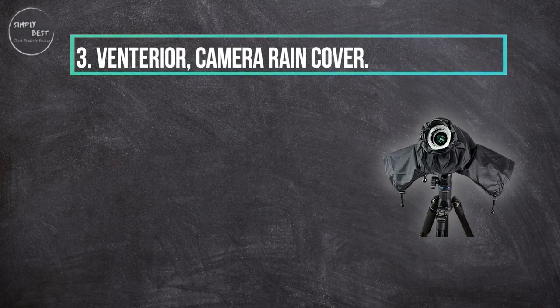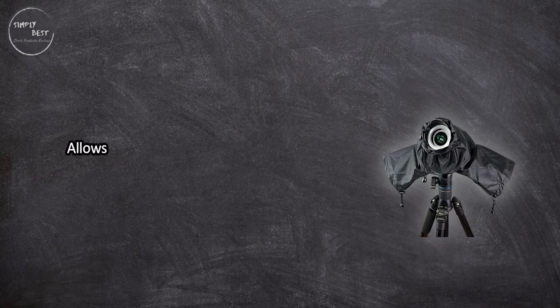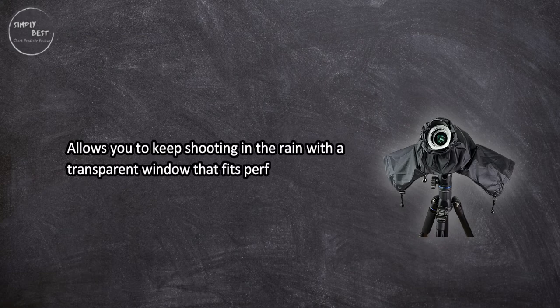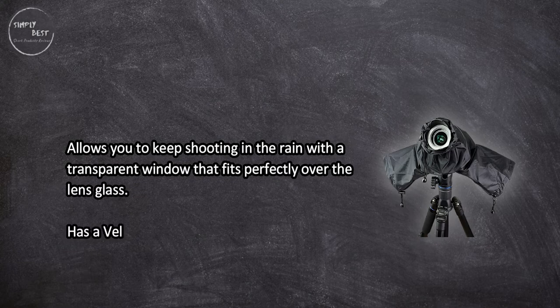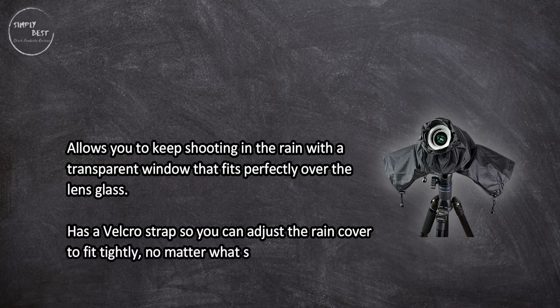At number three, the Interior camera rain cover allows you to keep shooting in the rain with a transparent window that fits perfectly over the lens. It has a velcro strap so you can adjust the rain cover to fit tightly no matter what size lens you're using.